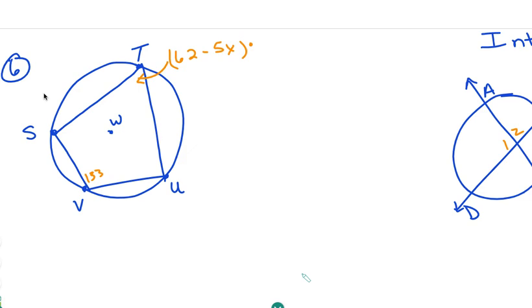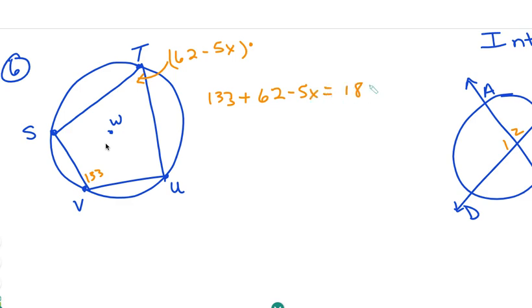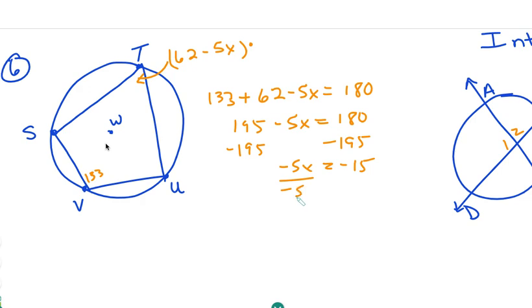Let's take a look at number six. These two angles are opposite each other in the quadrilateral inscribed in the circle. Starting with the larger angle: 133 plus 62 minus 5x is going to equal 180 — they are supplementary. So 195 minus 5x equals 180. Subtracting 195 from both sides gives negative 5x equals negative 15. Dividing by negative 5, x equals 3.